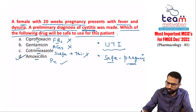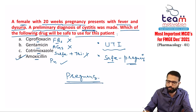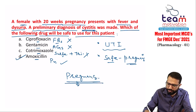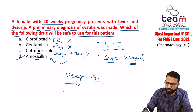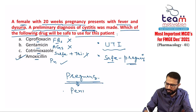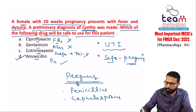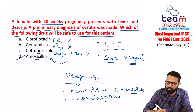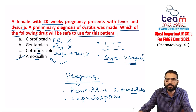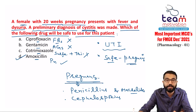Always remember: during pregnancy, beta-lactams are quite safe. Penicillins are very good and safe during pregnancy. Cephalosporins are also good and safe. Macrolides like azithromycin and clarithromycin are also safe. These are the antimicrobials which are safe during pregnancy and can be used without hesitation.